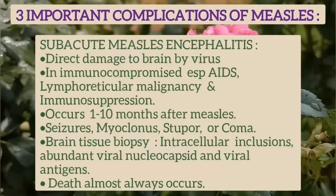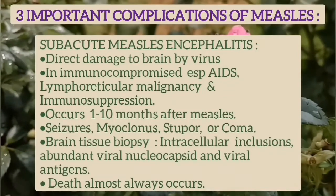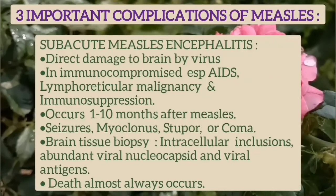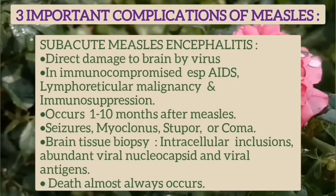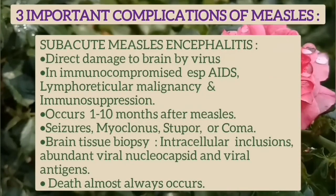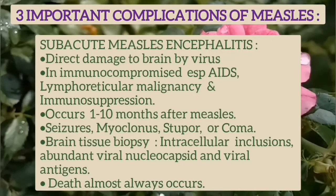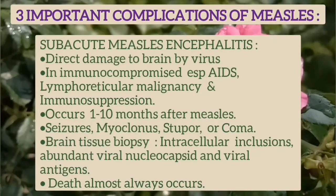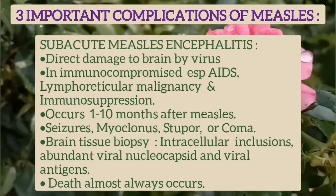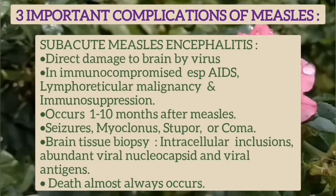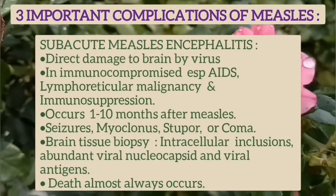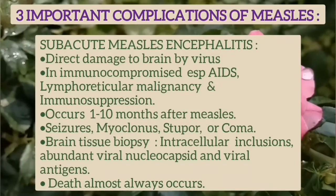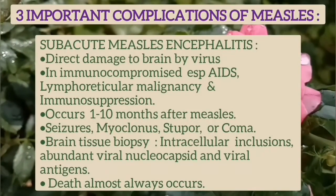The second is subacute measles encephalitis, which is direct damage of the brain by the virus in immunocompromised patients, especially those with lymphoreticular malignancy or on immunosuppression. It occurs about 1 to 10 months after measles. There are seizures, myoclonic stupor, or coma. Brain tissue biopsy shows intracellular inclusions, abundant viral nucleocapsid, and viral antigens. Death almost always occurs in this case.